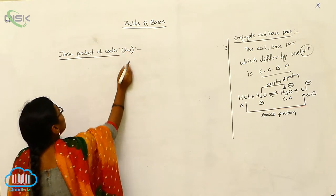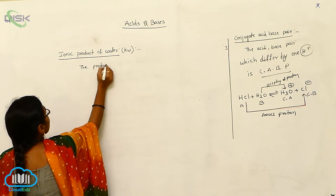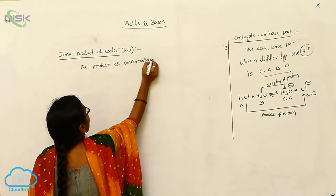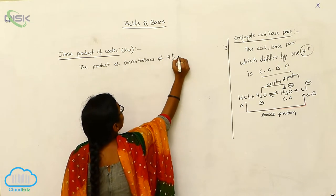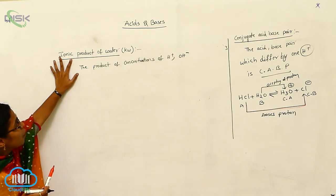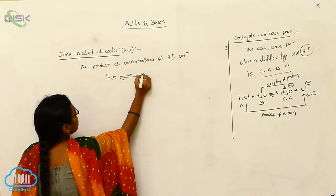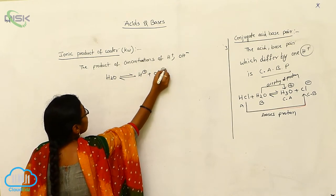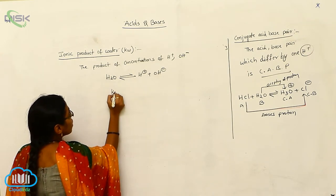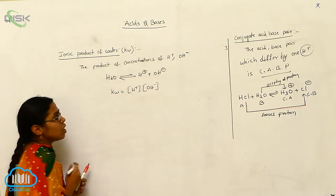The ionic product of water is indicated by Kw. It is defined as the product of the concentration of H⁺ ions and the concentration of OH⁻ ions. When water is in equilibrium: H₂O ⇌ H⁺ + OH⁻, so Kw = [H⁺][OH⁻].